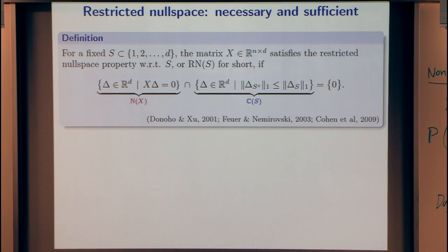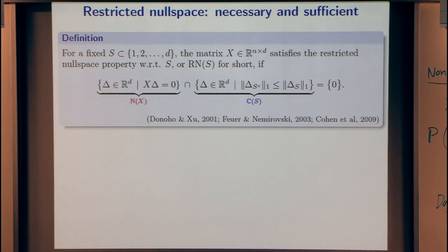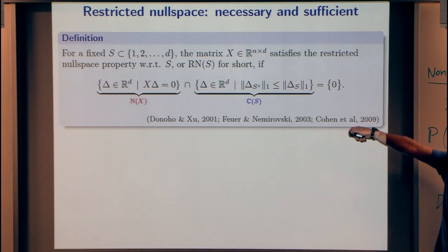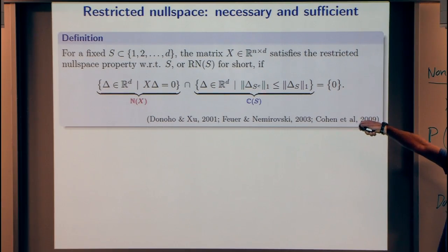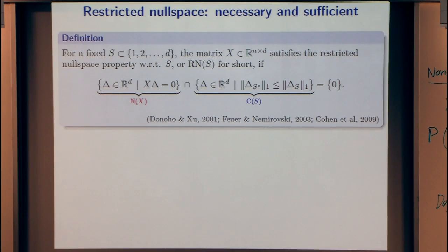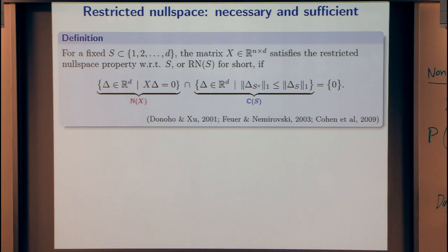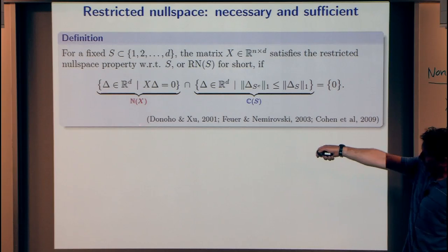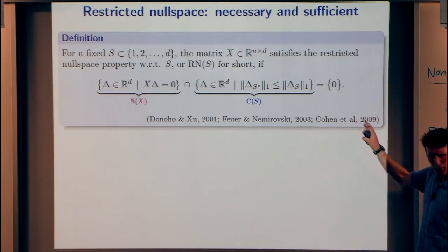Here's the definition of the restricted null space property. We fix a subset S — normally the support of theta-star — and we say the matrix satisfies a restricted null space property on that subset if when we look at the null space and a particular cone, their intersection contains only zero. The cone is the set of vectors whose L1 norm on the bad set (the complement of the support) is upper bounded by the L1 norm on the good set (the support). This formalizes vectors that are relatively sparse. This idea is essentially in the paper by Donoho and Shue in 2001, but Cohen et al. gave it this name in a paper in the Journal of the AMS.